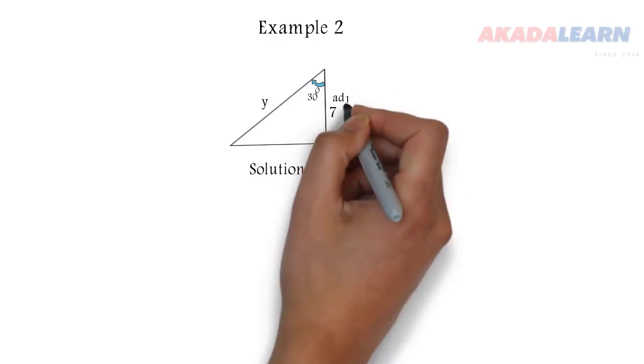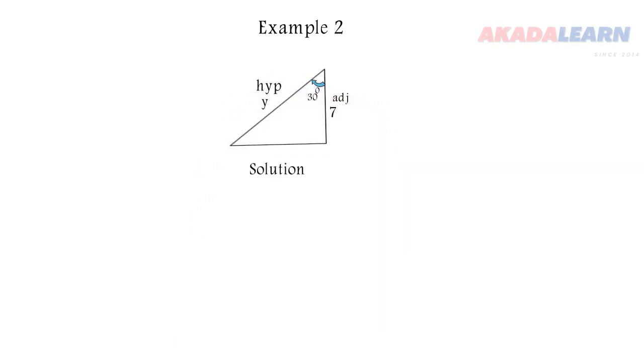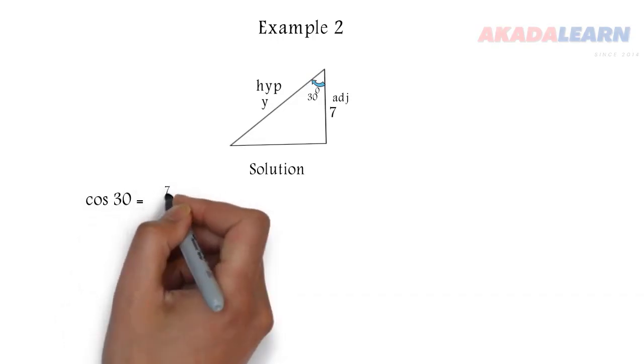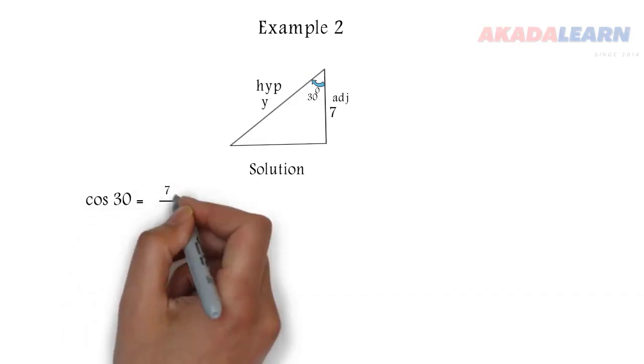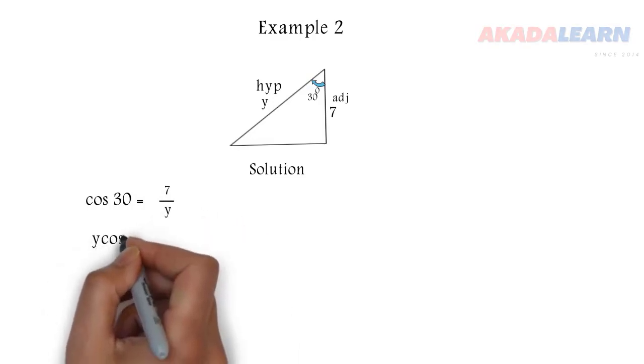So we have adjacent and hypotenuse. Remember your SOHCAHTOA, so we are going to use cosine. So cos 30 degree is adjacent, which is seven, over hypotenuse. Our hypotenuse is y, so cross multiply: y cos 30 equals 7, so y equals 7 divided by cos 30.